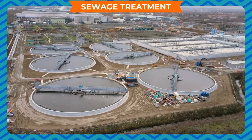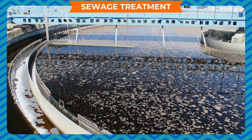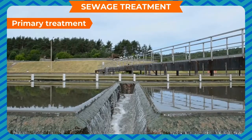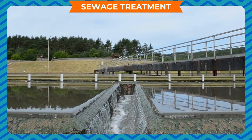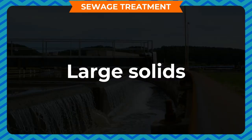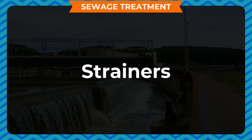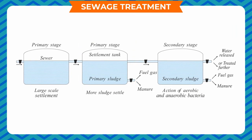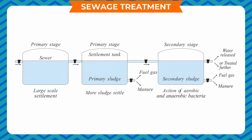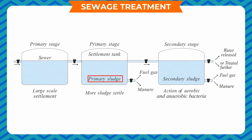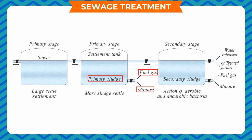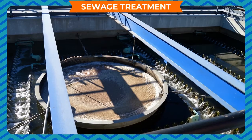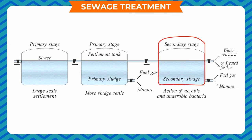Sewage Treatment: There are three processes involved in treating waste water before it is discharged into water reservoirs. Primary Treatment: Sewage is carried to the sewage treatment plant through sewers. Large solids, leaves, rags and plastics are removed by strainers or screens. It then passes to the settlement tank where most suspended solids sink to the bottom. The solid that settles is called primary sludge, used to produce compost and biogas. Large materials that float on top are called scum, which is removed by a skimmer. The clarified water then moves to the secondary treatment stage.